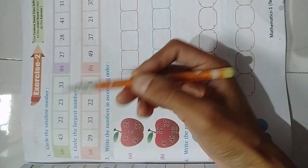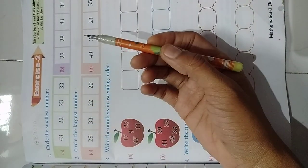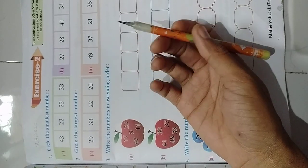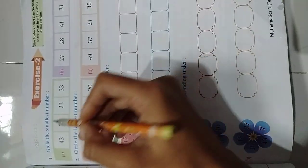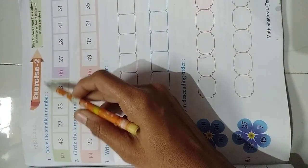In that we learned the 10s and 1s concept right. We also write some forward, backward numbers. Now today we are going to solve exercise number 2.